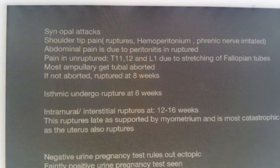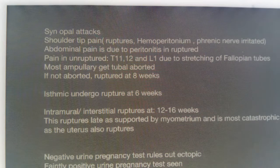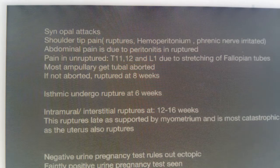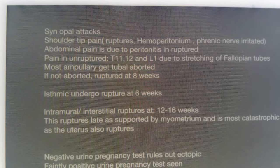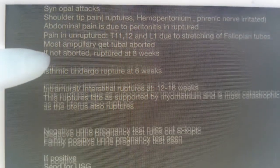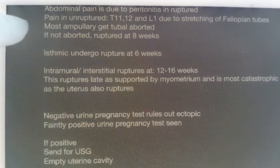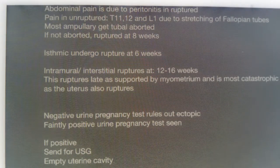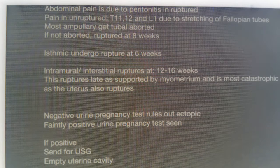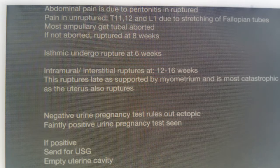Shoulder tip pain may occur due to rupture or hemoperitoneum causing phrenic nerve irritation. Abdominal pain may be due to rupture leading to peritonitis. Pain in unruptured ectopic pregnancy is due to stretching of the fallopian tube, conducted by nerve roots T11, T12, and L1.